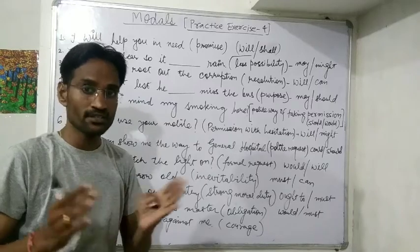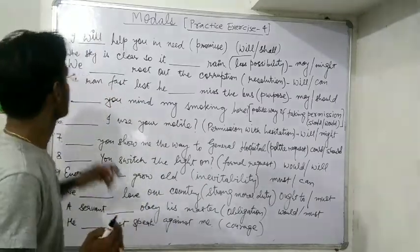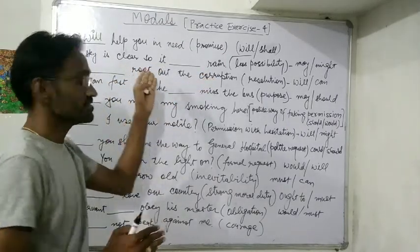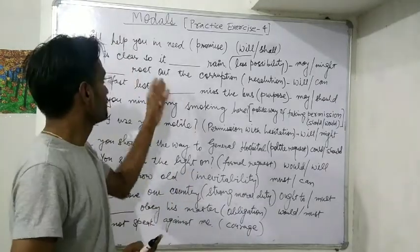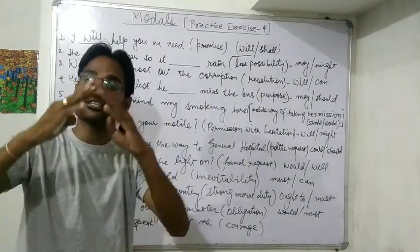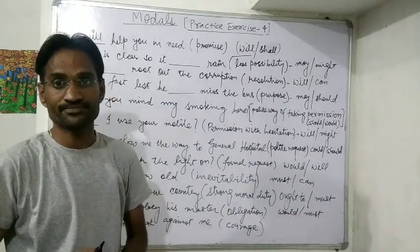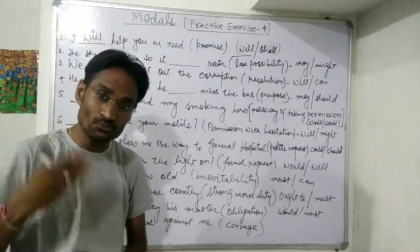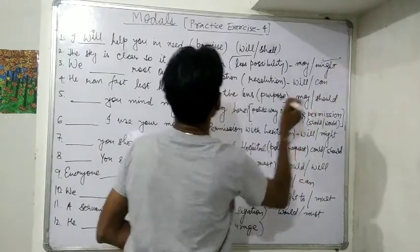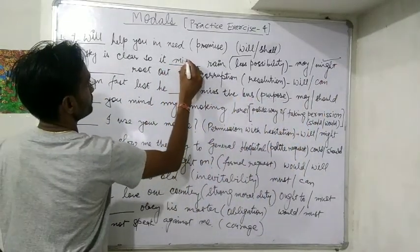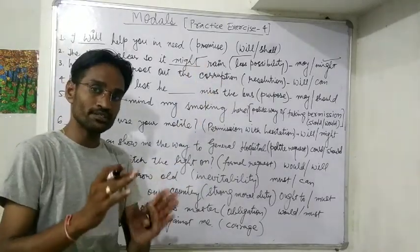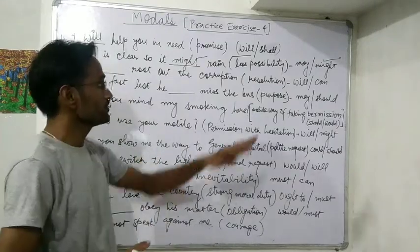Next: 'The sky is clear, so it rain.' There are a few clouds — less possibility. When the possibility is only 10 to 20 percent maximum, that is a remote possibility. For less or remote possibility, we use the modal 'might.' So the answer is: 'It might rain.'